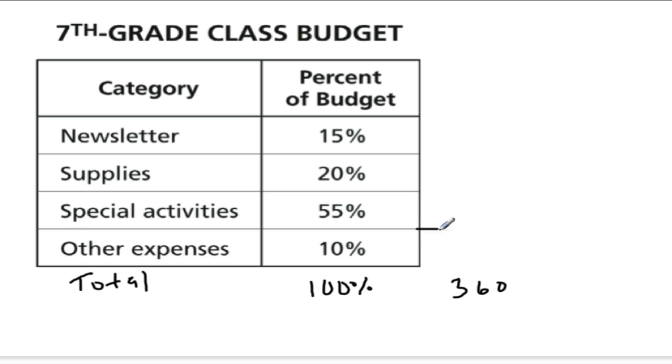But we want to write each of these percents as degrees of a circle. Now they give you 15% first, but don't be afraid to change the order up and look at the other options. It seems to me that 10% would be the easiest place to start.